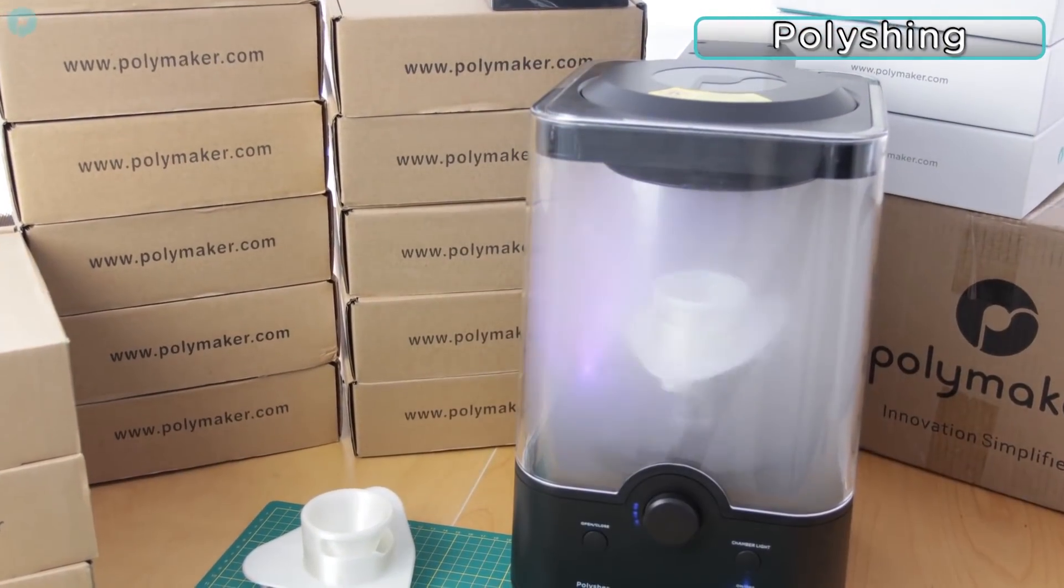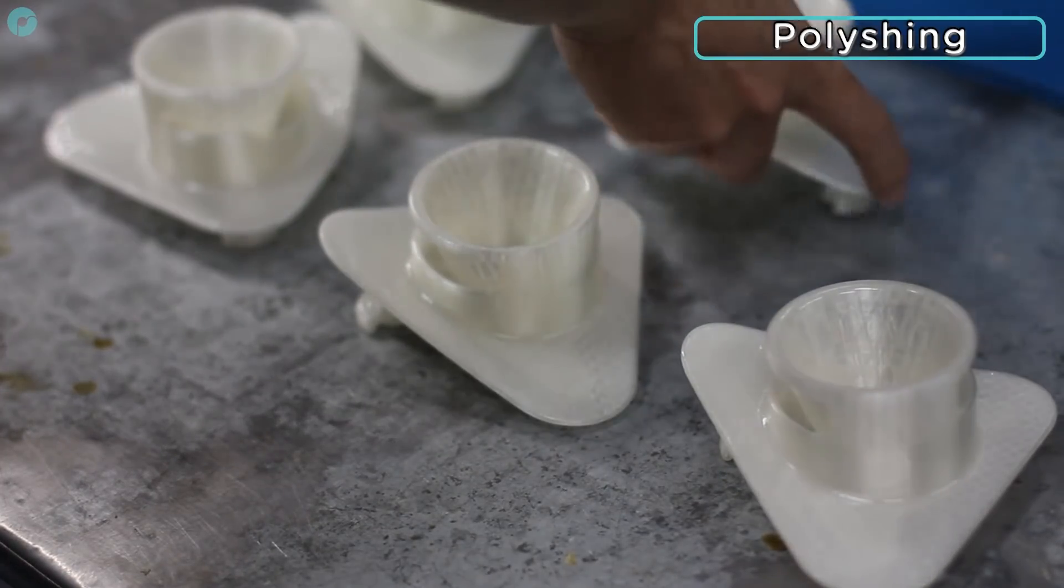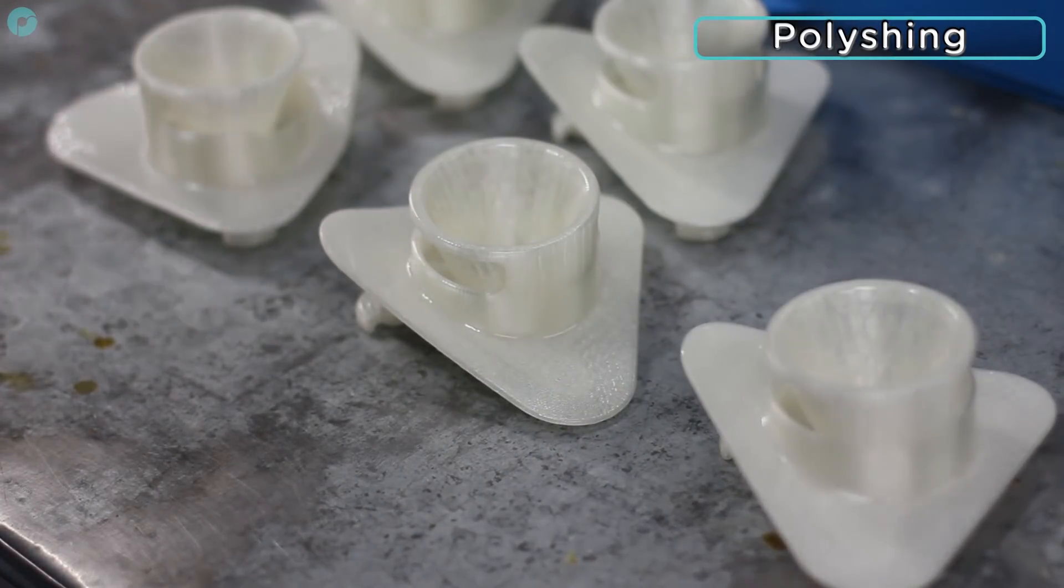Polycast can also be used with Polymaker's layer-free technology, which removes the layers and creates a clean surface for investment casting. This process reduces the chance of small bubbles forming in between the layers when the parts are dipped in the ceramic slurry.